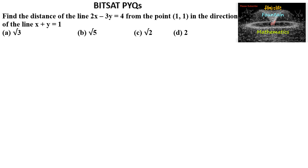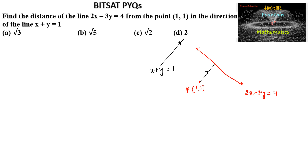We need to find the distance from the point (1,1) to the line 2x − 3y = 4 in the direction of the line x + y = 1. The slope of the line x + y = 1 is m = −a/b = −1. Since we are measuring distance in the direction of this line, the slope is also −1.